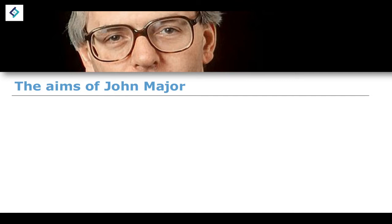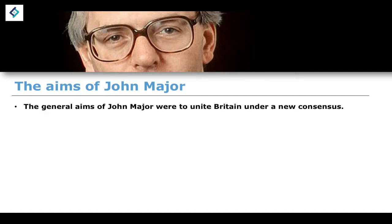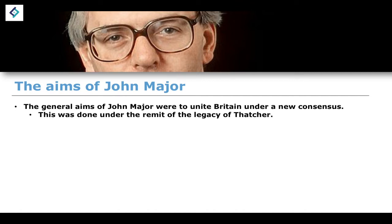Beginning then, let's talk about the aims of John Major as Prime Minister. He wanted to unite Britain under a new form of consensus. He saw that there was a lot of division under the remit when it comes to the legacy of Thatcher — a lot of division and a lot of conflict between people within Great Britain itself.